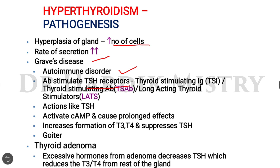Normally, thyroid hormone secretion occurs in the presence of TSH released from the anterior pituitary gland. In autoimmune disorders, antibodies — including thyroid stimulating immunoglobulins, thyroid stimulating antibodies, or long-acting thyroid stimulators — abnormally stimulate TSH receptors, ultimately increasing T3 and T4 formation and suppressing TSH.